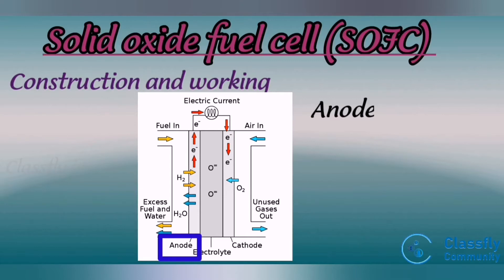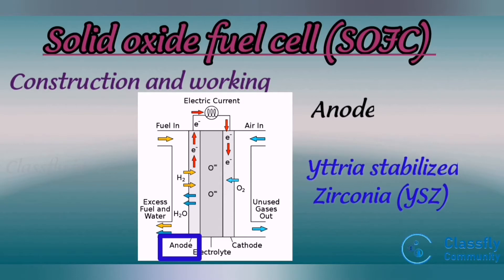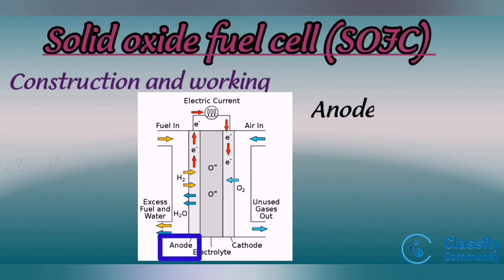The anode ceramic layer must be very porous to allow the fuel to flow towards the electrolyte. The most common material used is a cermet made up of nickel mixed with a ceramic material used for the electrolyte, typically YSZ — that is, yttria-stabilized zirconia — as a nanomaterial-based catalyst. The anode is commonly the thickest and strongest layer in each cell because it has the smallest polarization losses and often provides mechanical support.